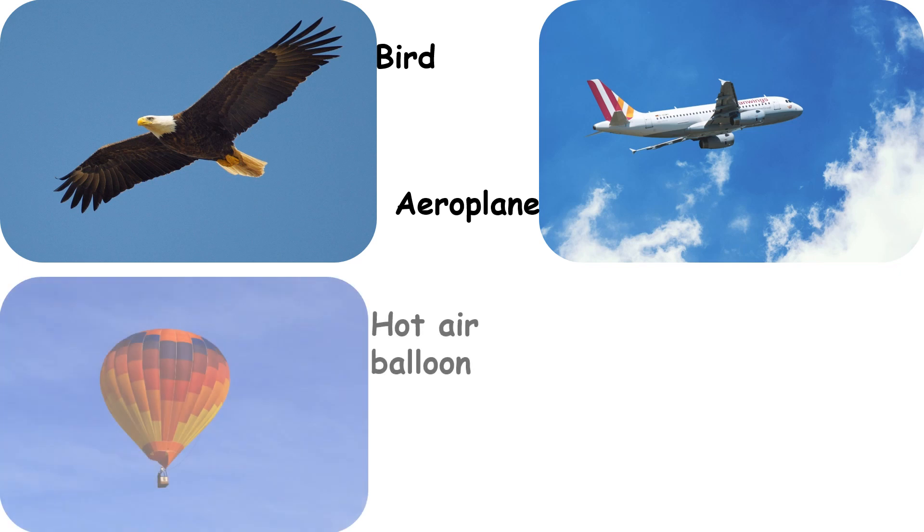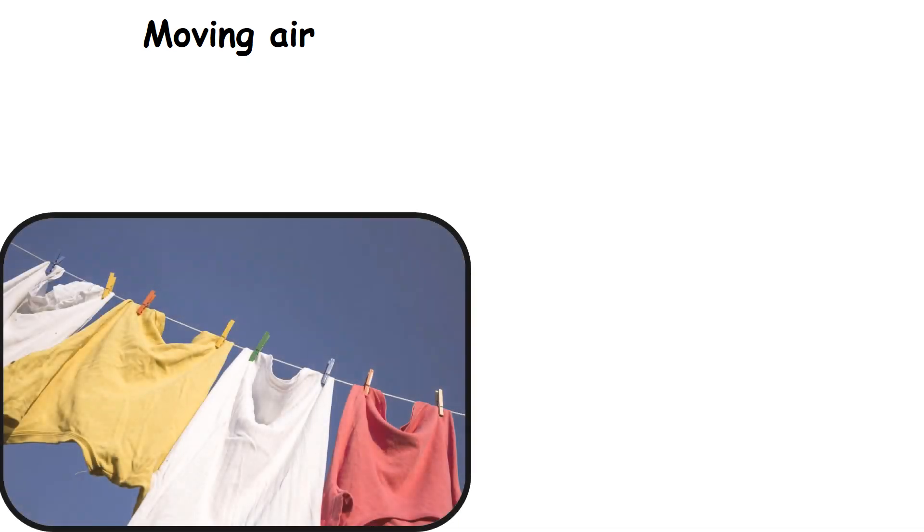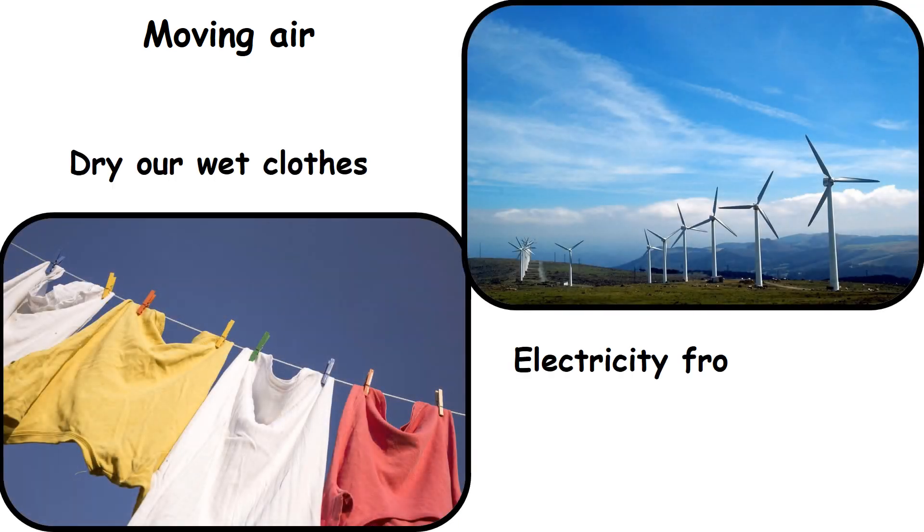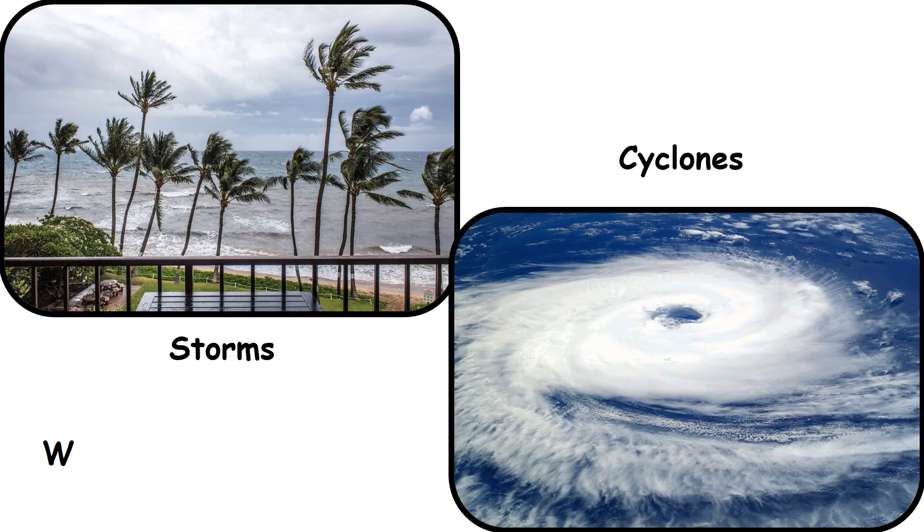Birds, aeroplanes, hot air balloons, and kites move in the air. Moving air helps us in many ways like to dry our wet clothes and to get electricity from windmills. During storms and cyclones, the wind speed is very high.